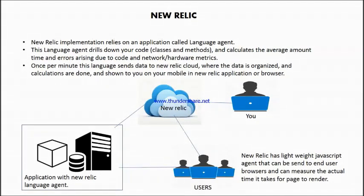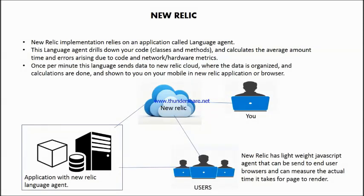What this agent does is it instruments your code and calculates the average amount of time and errors arising due to the code. Once per minute it sends the data to the New Relic cloud, where New Relic organizes your data and presents it to your browser or mobile application.